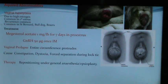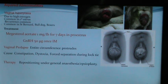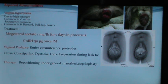Acquired abnormalities include vaginal hyperplasia — swelling of the vaginal walls leading to exposure of the vaginal mucous membrane outside the vulva lips. This is due to high estrogens, is common in the first estrus, and common in St. Bernard, Bulldog, and Boxer breeds. Recurrence is common but it usually recedes following completion of the estrus period. Treatment includes oral megestrol acetate 1 mg per pound for 7 days in proestrus, or GnRH 50 micrograms intramuscularly once.